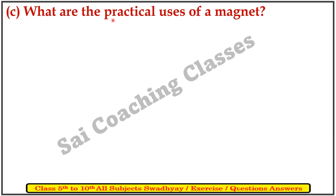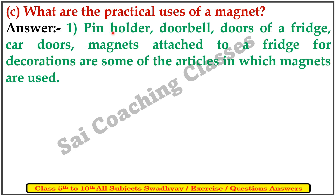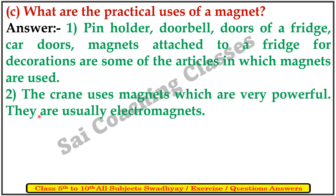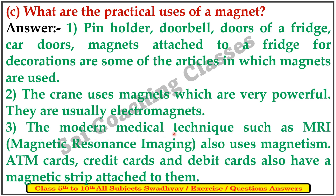C. What are the practical uses of a magnet? Answer: Pin holders, doorbells, doors of the fridge, car doors, and decorations are some articles where magnets are used. Second, cranes use magnets which are very powerful — they are usually electromagnets. Third, modern medical techniques such as MRI, magnetic resonance imaging, also use magnetism. ATM cards, credit cards, and debit cards also have a magnetic strip attached to them.